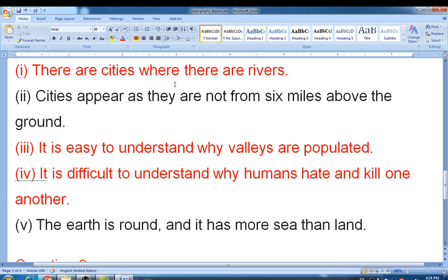There are cities where there are rivers. Second, cities appear as they are not from six miles above the ground. It is easy to understand why valleys are populated. It is difficult to understand why humans hate and kill one another.